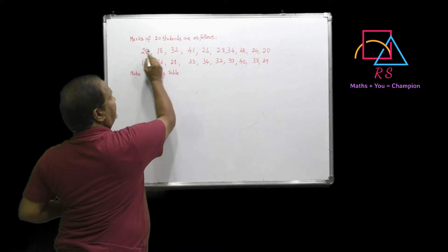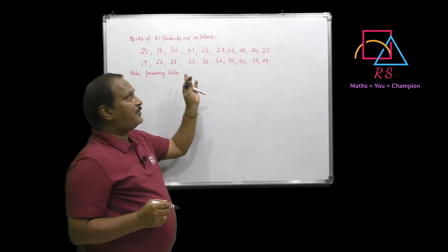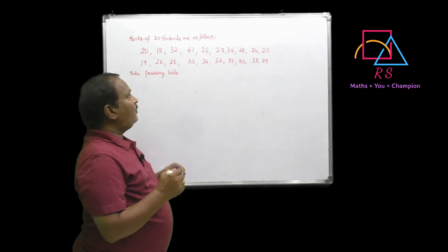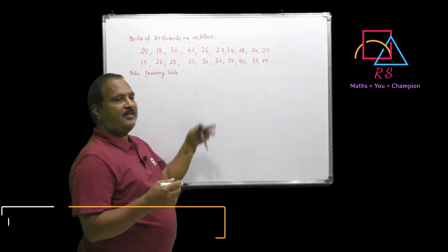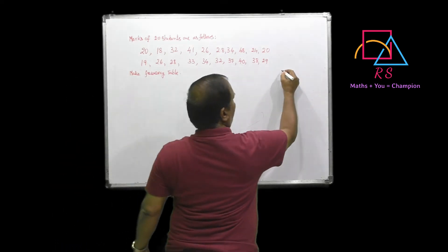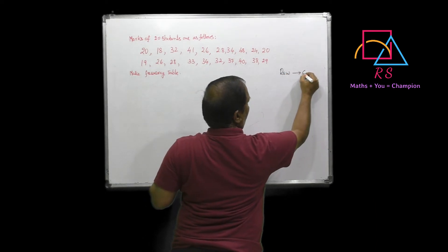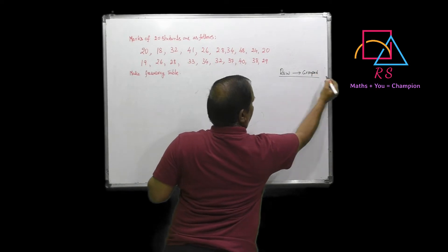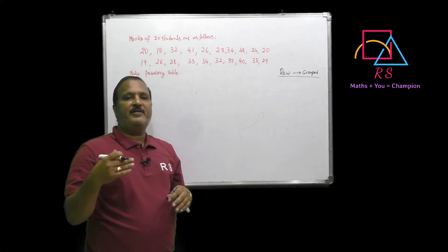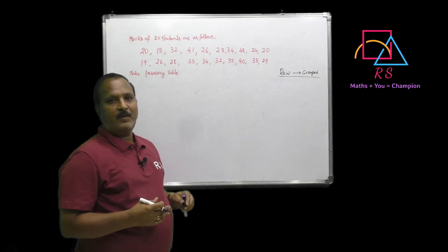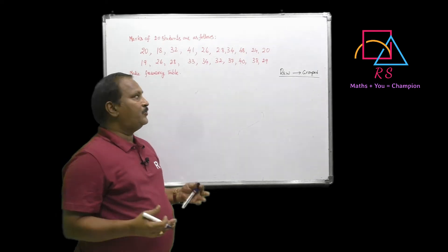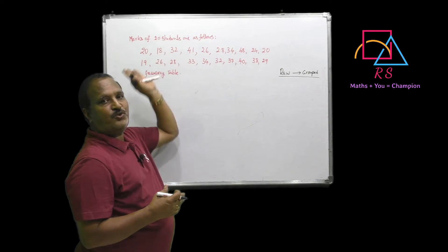Now, the marks of 20 students are given here — 10 students in one row, 10 students in another row. This is raw data, meaning I collected this data by going to a class. We have to change this raw data into grouped data, because using raw data it is very difficult to analyze the class students. If students are arranged in groups, it will be easy to analyze the statistics.